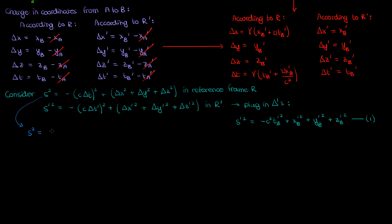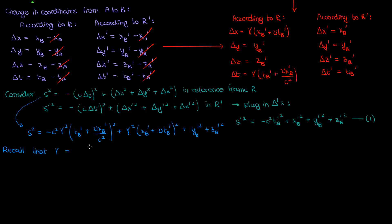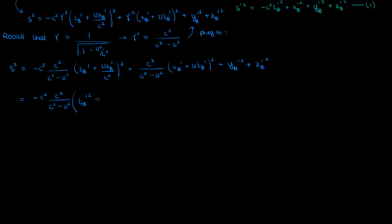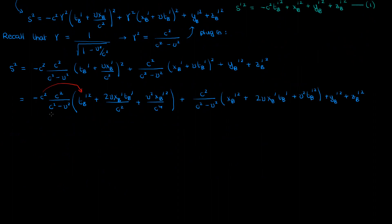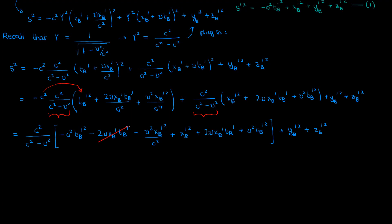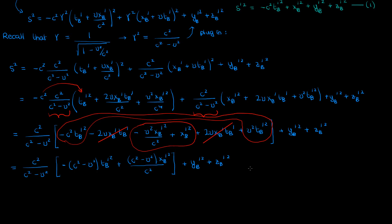Now let's look at the s squared term. We'll substitute the coordinate changes into the unprimed s squared equation. Recall that gamma, the Lorentz factor, is given by its standard equation where v is the velocity of R' relative to R. Gamma squared can be written as c squared over the difference between c squared and v squared. Plugging this in, expanding the squared terms, multiplying out c squared in the first term, and collecting common factors, we can cancel terms involving v and x'B, and combine terms involving t'B squared and x'B squared to arrive at equation 2 for s squared in frame R.